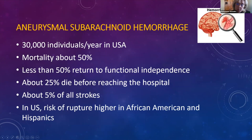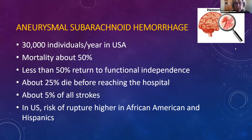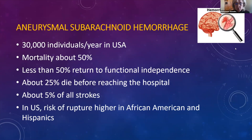Subarachnoid hemorrhage due to aneurysm is still a devastating disease affecting 30,000 to 40,000 individuals in the U.S. per year, with still very high mortality despite improved technologies, detection, and early interventions. Less than 50% return to functional independence, and 25% die before reaching the hospital. We are moving the needle in a positive direction, but it remains a devastating disease.